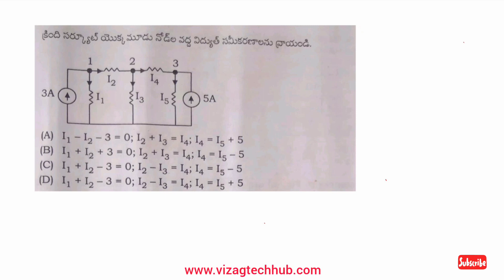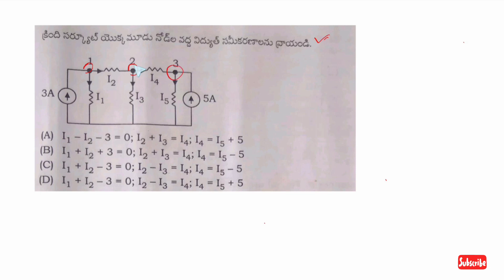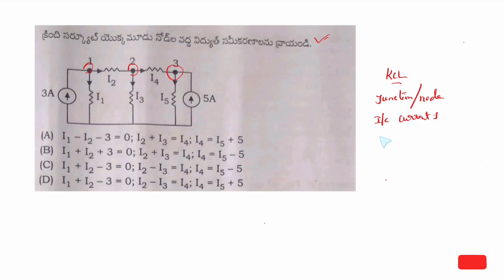This video is about a circuit and this is a junction or node. All incoming current is equal to outgoing current. This is the law of conservation of charge.